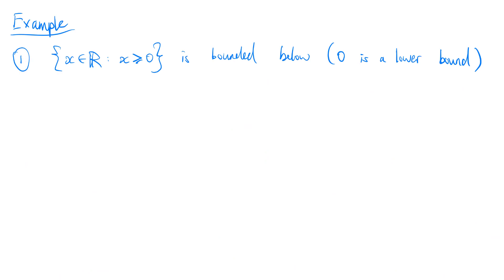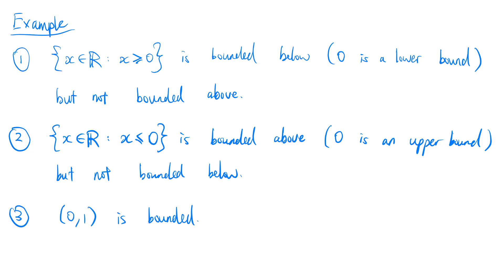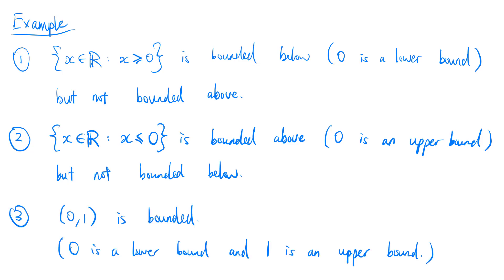Let's look at some examples. The set of real numbers x where x is greater than or equal to 0 is bounded below, where 0 is a lower bound, but not bounded above. The set of real numbers x where x is less than or equal to 0 is bounded above, where 0 is an upper bound, but not bounded below. The open interval (0,1) is bounded, where 0 is a lower bound and 1 is an upper bound.